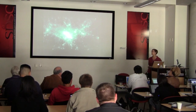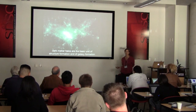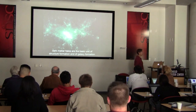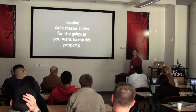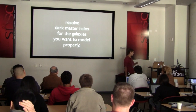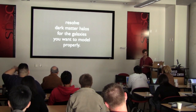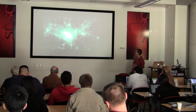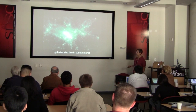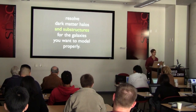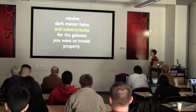Dark matter halos are really the basic unit of structure formation and galaxy formation. If you want to populate a simulation with galaxies, the first thing you want to do is resolve the dark matter halos for the galaxies you want to model, and then figure out how those galaxies are related to the dark matter halos. But galaxies don't just live in large dark matter halos — they also live in dark matter substructures, so you also want to resolve the dark matter halos and substructures for all of the galaxies you want to model properly.